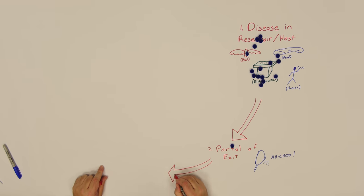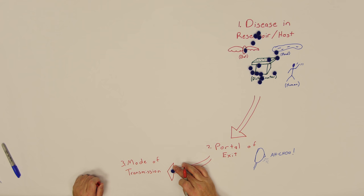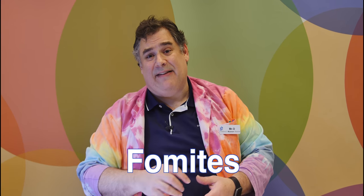The next step is its mode of transmission. In other words, once the pathogen leaves its host, how does it find its way to a new host? There are several modes of transmission. For example, direct contact with an infected person, or fomites, which means an infected object. Or, of course, there's inhalation.